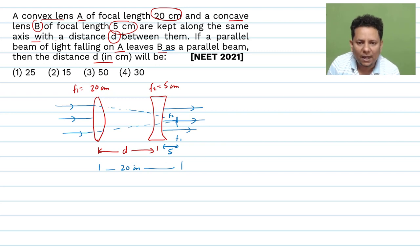Now this implies we can say that d plus 5 will be equal to 20, which implies d will be equal to 20 minus 5, which is 15 centimeters.